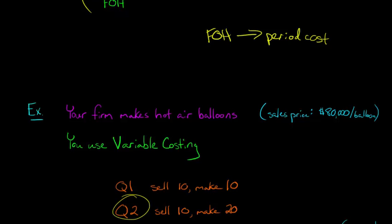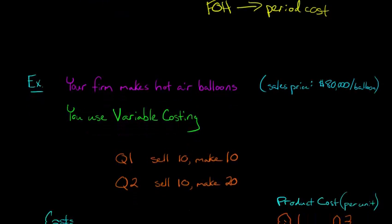In quarter two, it's going to be a little different. You're going to sell 10 hot air balloons again — sales haven't changed — but you're going to produce or manufacture 20 of them. So you're going to have some left over in inventory. It's a subtle difference, but let's go ahead and work through this.